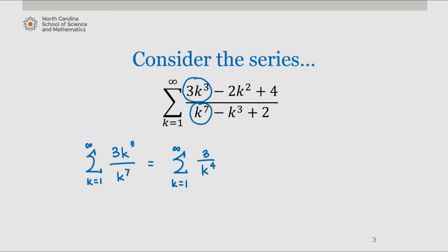Now we know the behavior of this series. It's a constant multiple of a convergent p series since p is 4, which is greater than 1.